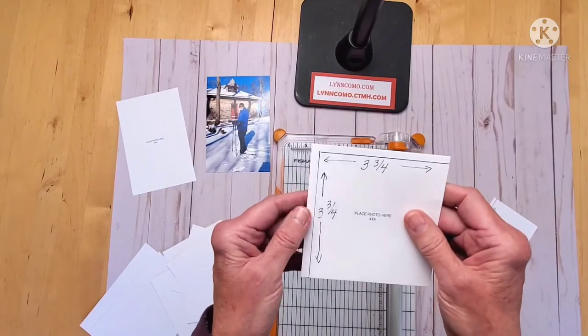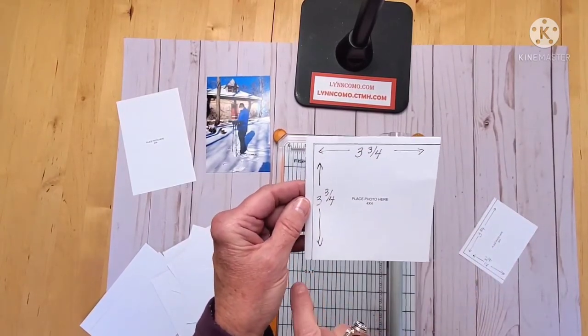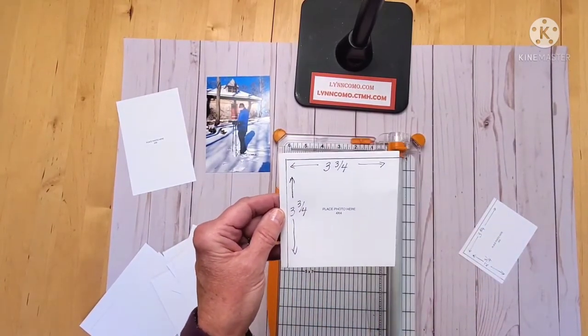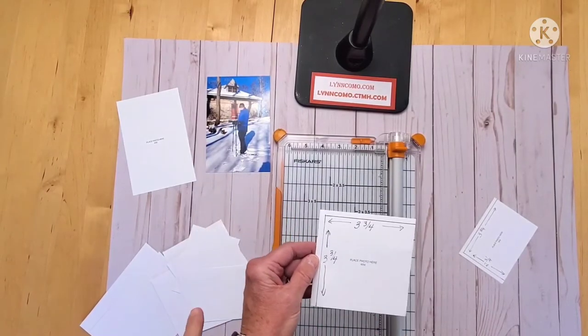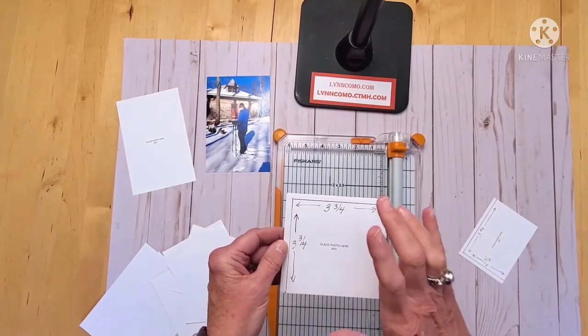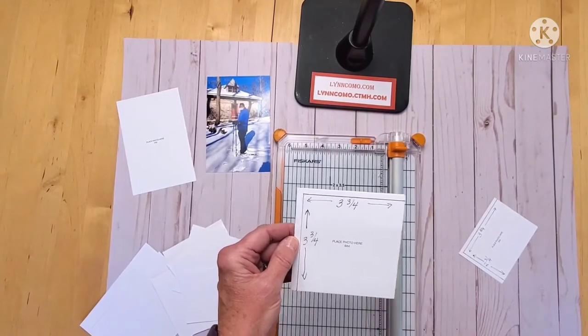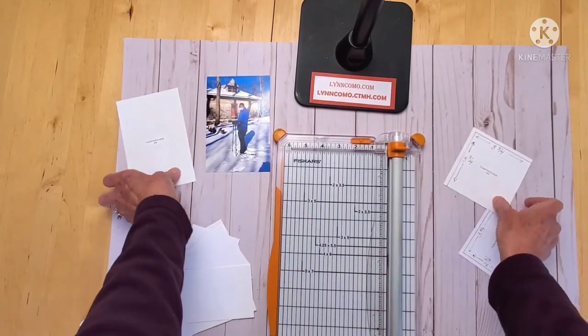Same thing with a 4x4. You take a quarter of an inch off in an L and you'll have the perfect size photo mat and photo to marry each other that shows that little bit of photo mat around the photo which is awesome.